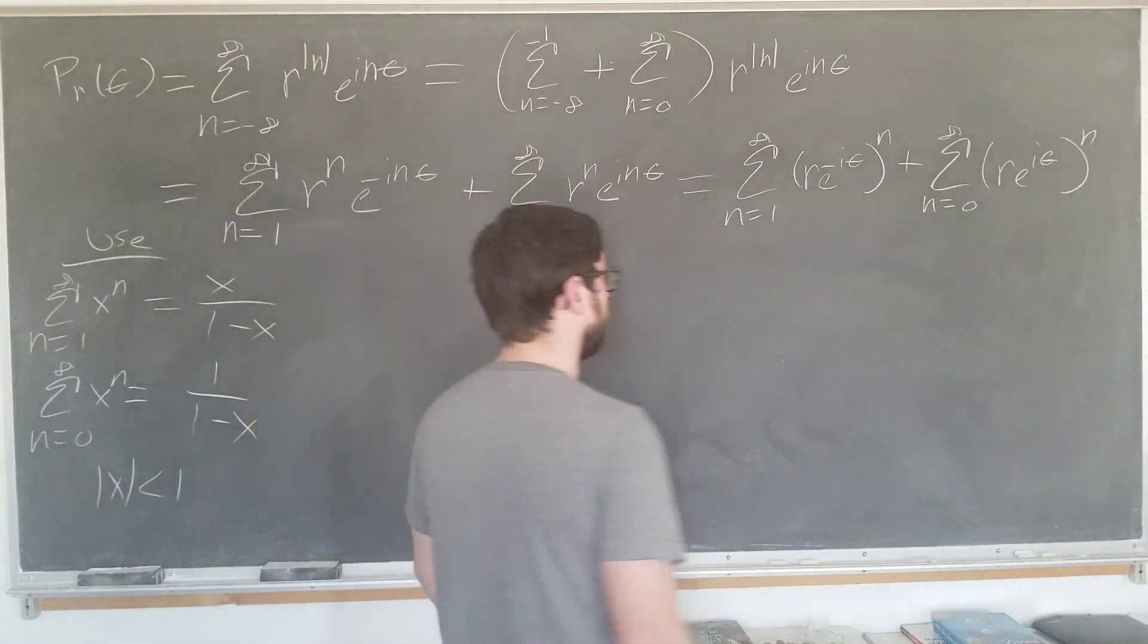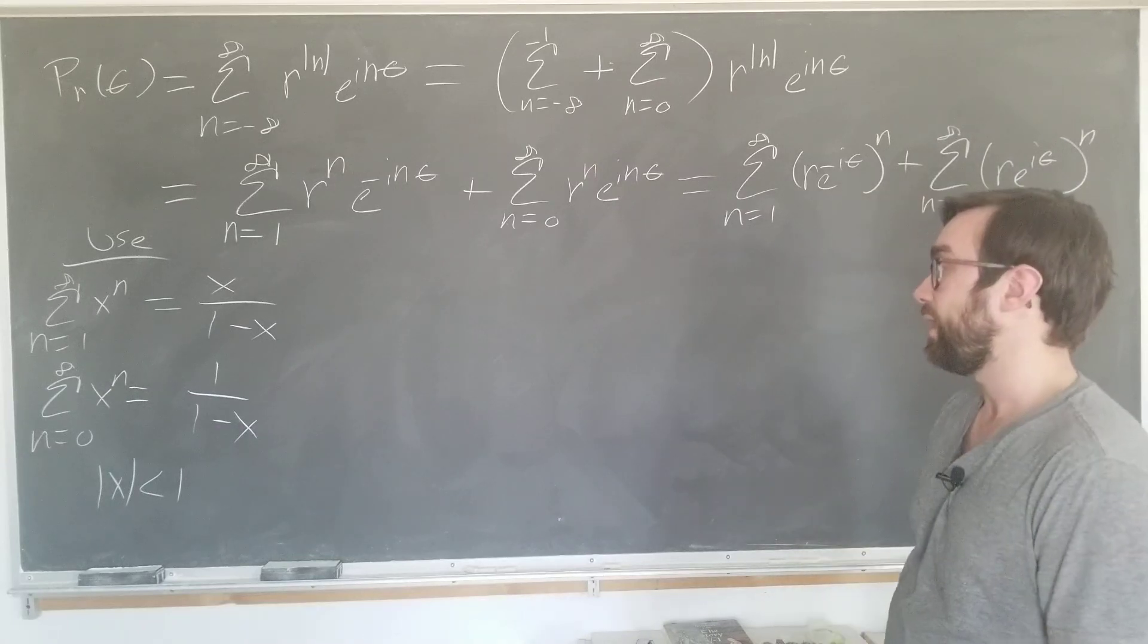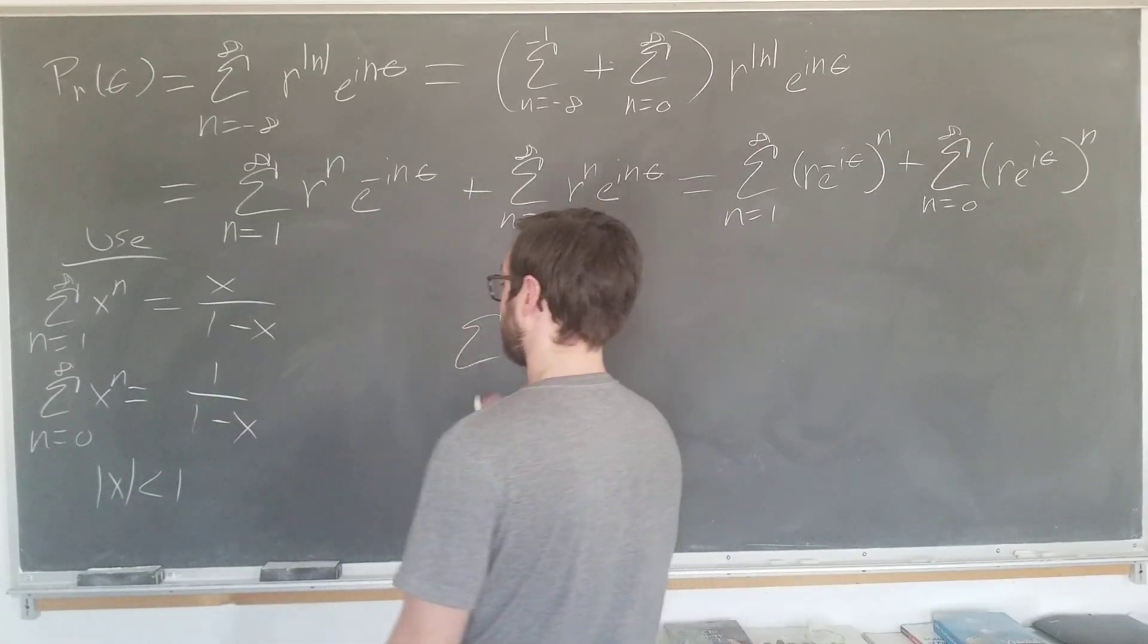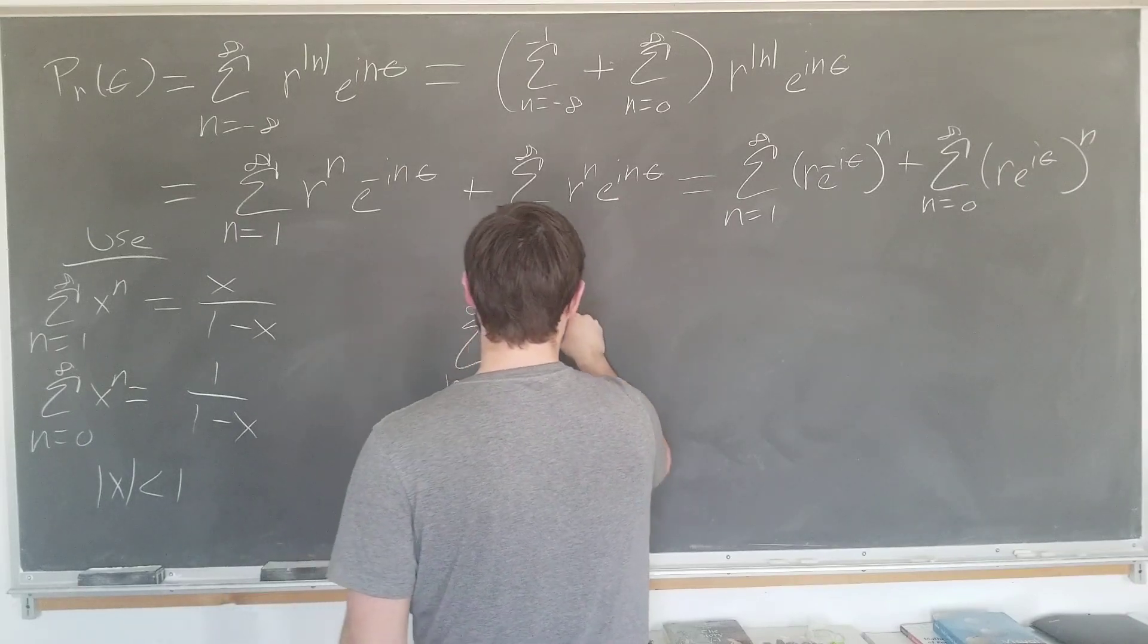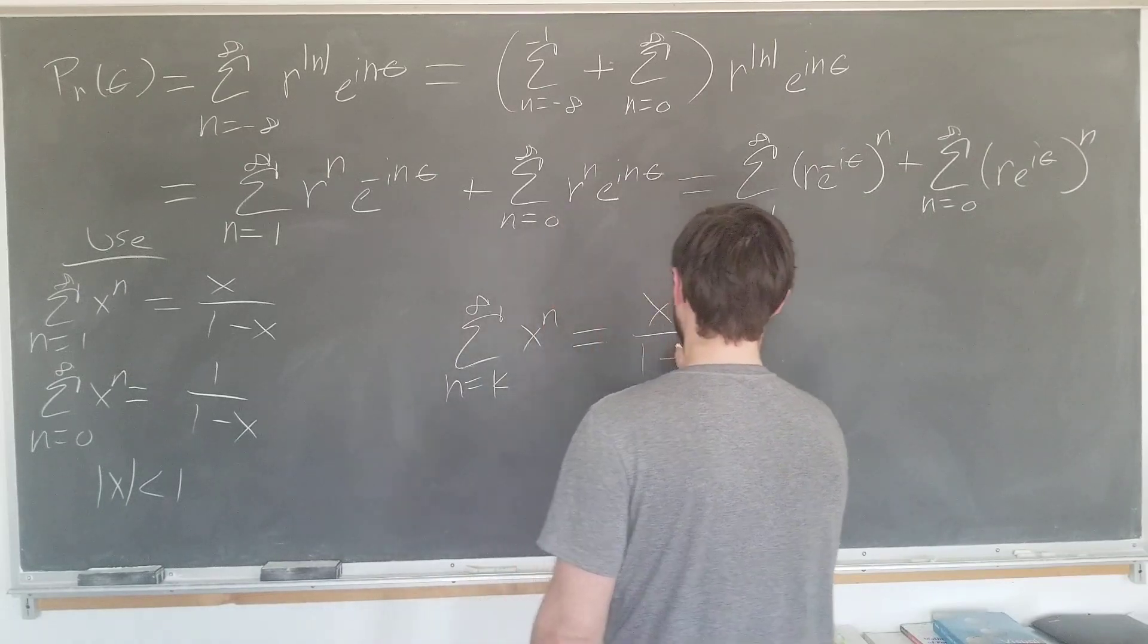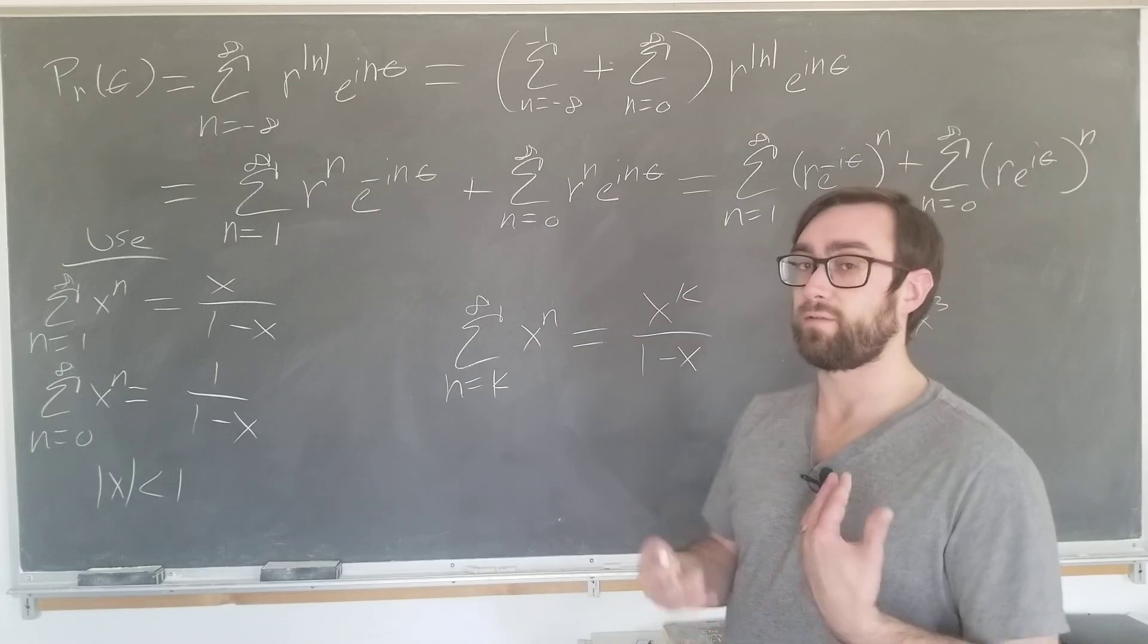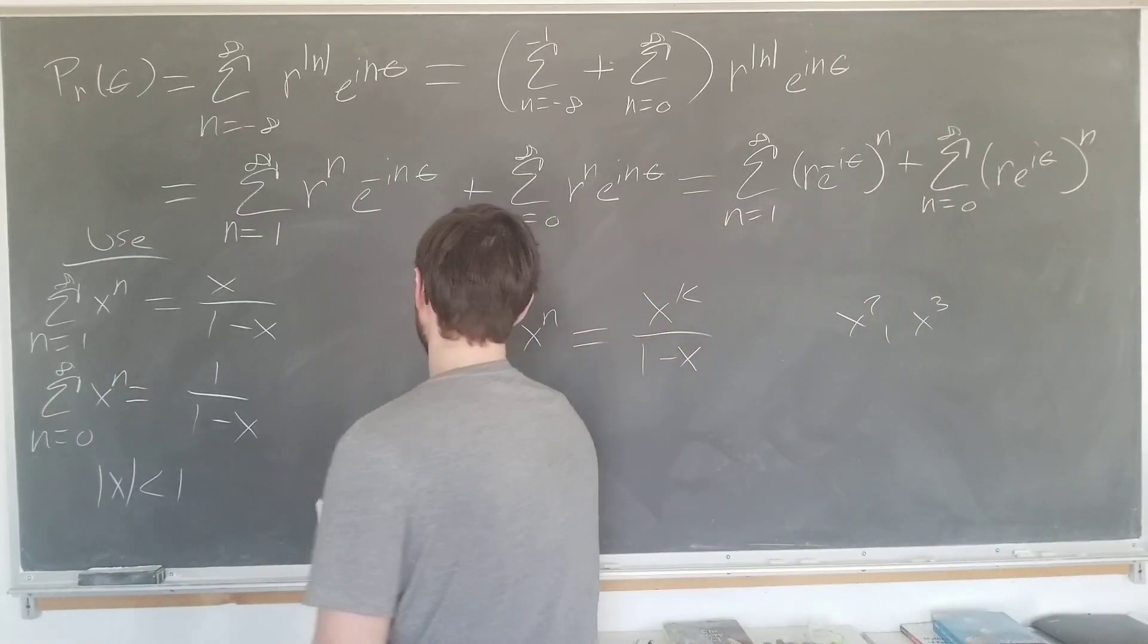We are not going to really care about convergence issues in this video since this is going to be a more physics style of math. Just some interesting facts about this series here. You can easily generalize this. If n starts from any value k to infinity, it's actually just going to be x to the k over 1 minus x. So if you want to get rid of the first few terms, you just have a higher power of x on top. It's good to know for the future.